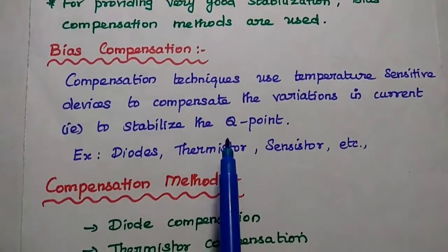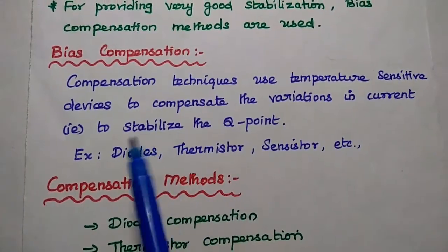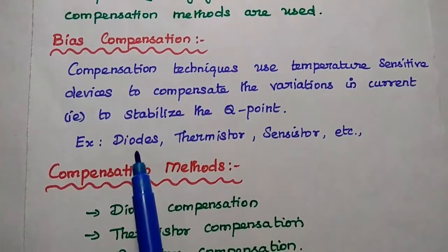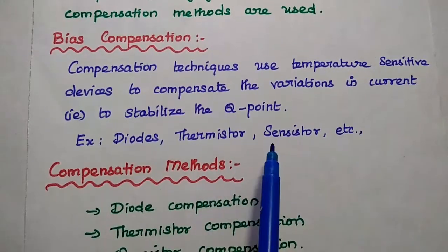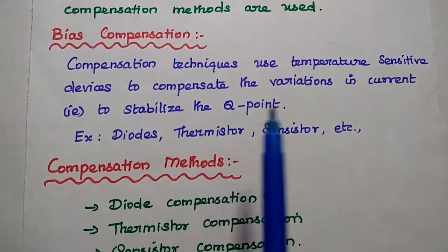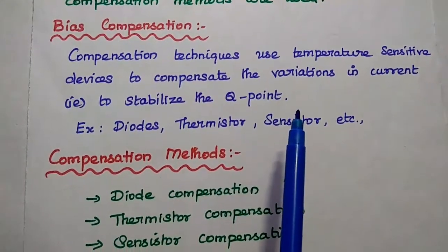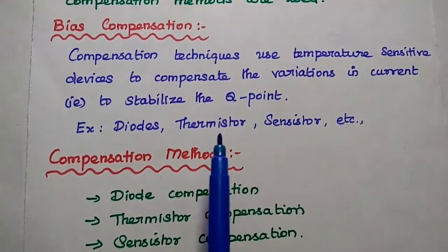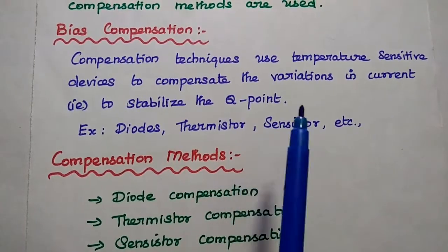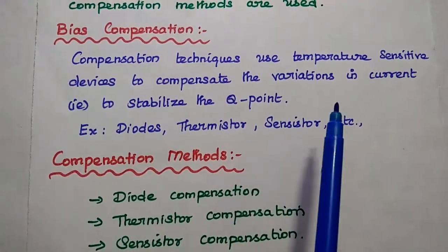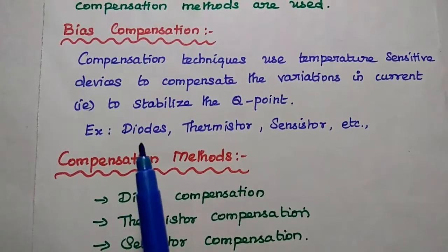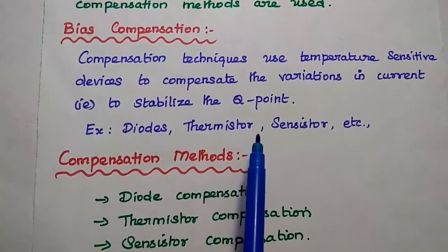What is bias compensation? In this method, temperature sensitive devices like diode, thermistor, or sensistor are used to compensate the variations in the current at the output side, to maintain the Q point stable. Examples are diodes, thermistor, and sensistor.